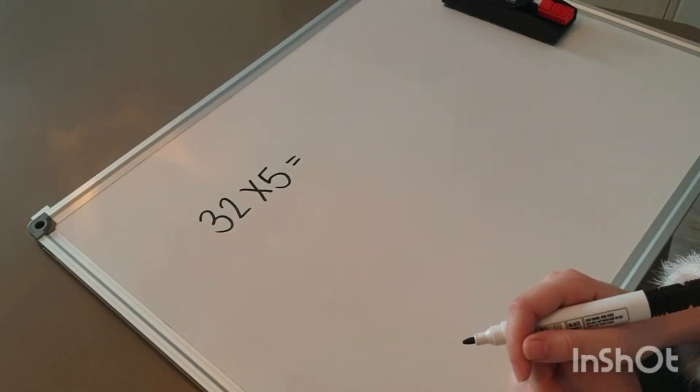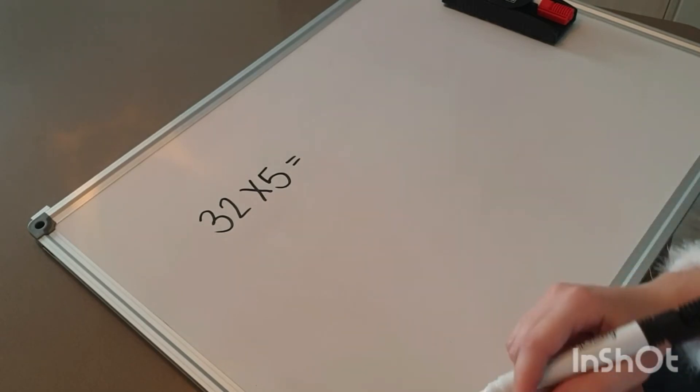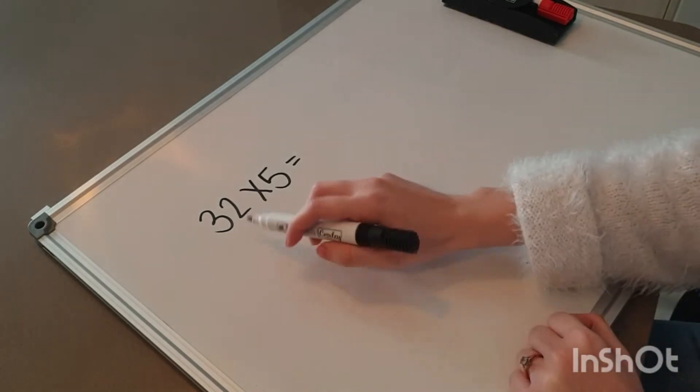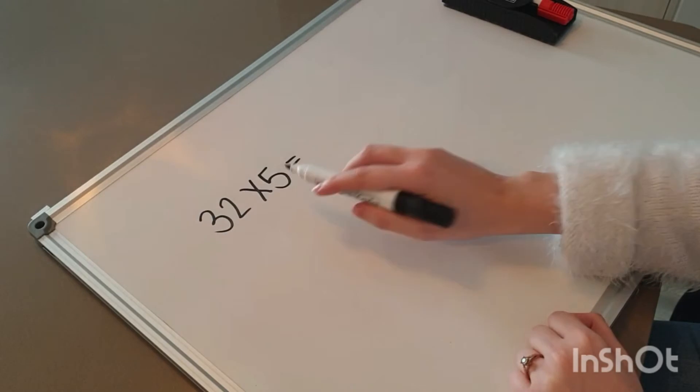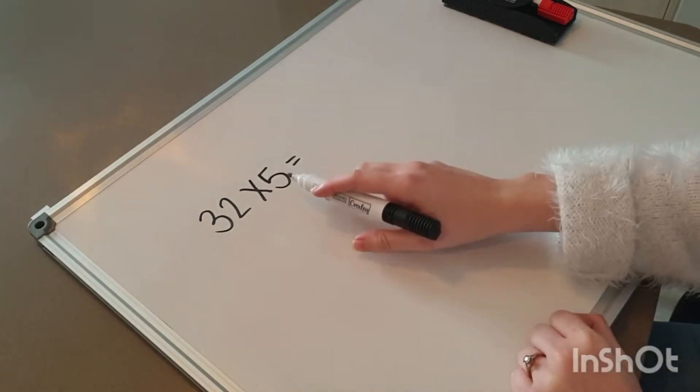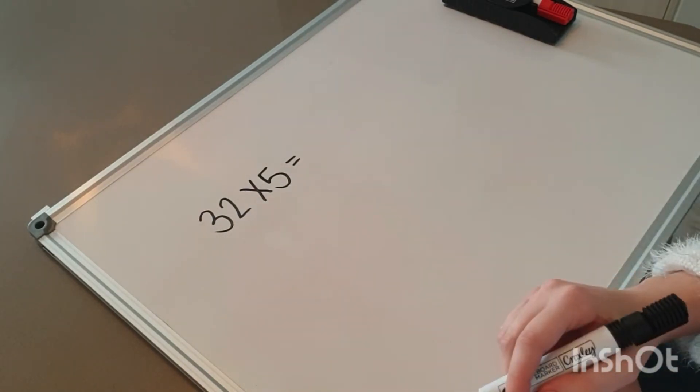Today, I'm going to show you how to do the multiplication sums. Our sum here is 32 times 5, and counting in fives for 32 times is going to be way too long. So, I can use a method to get the answer.